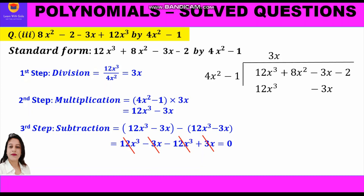In the vertical form, we write a minus sign beneath 12x³ and minus 3x and change their signs. Plus 12x³ becomes minus 12x³ and minus 3x becomes plus 3x. Plus 12x³ from the dividend cancels with minus 12x³, and minus 3x cancels with plus 3x.